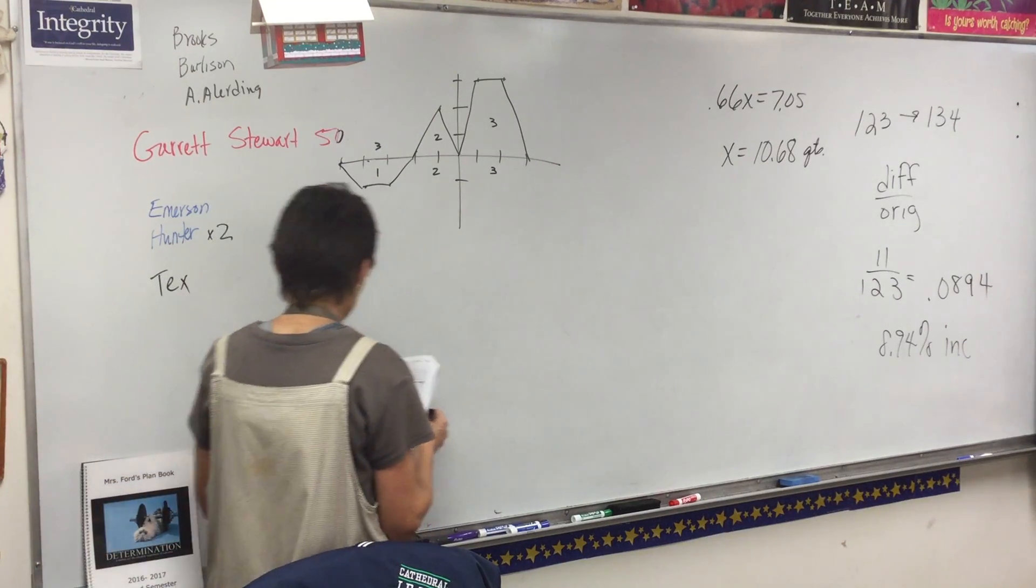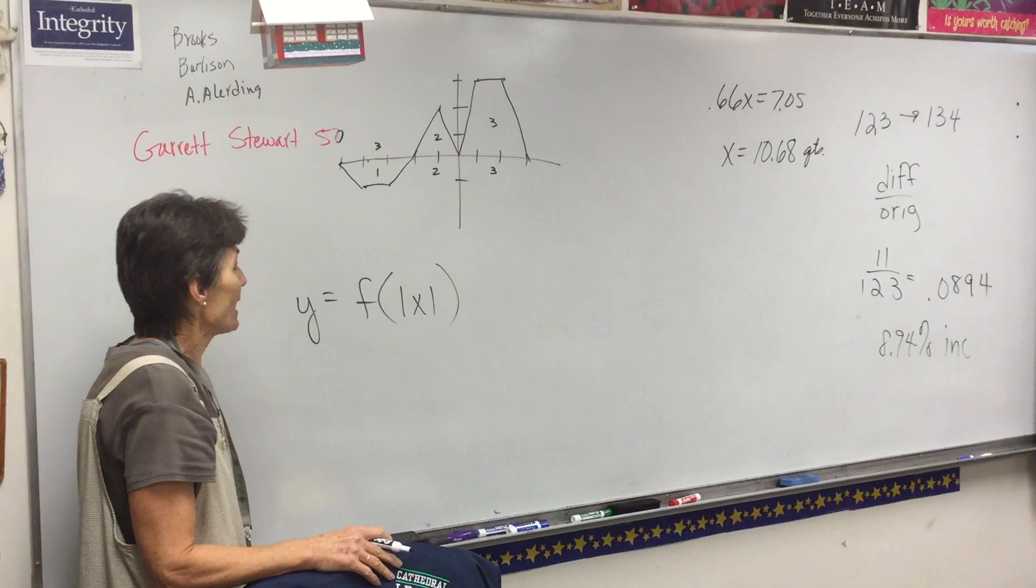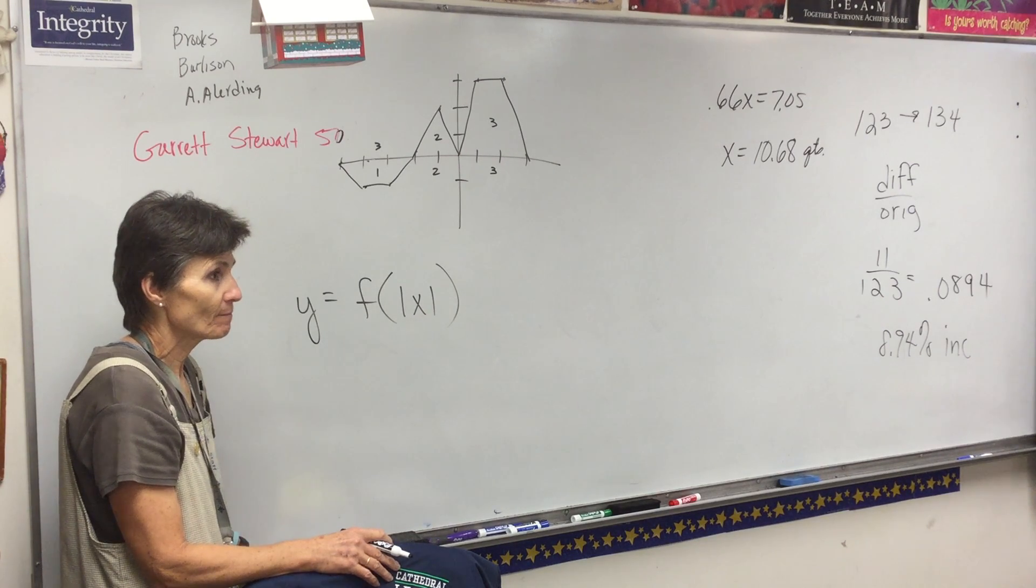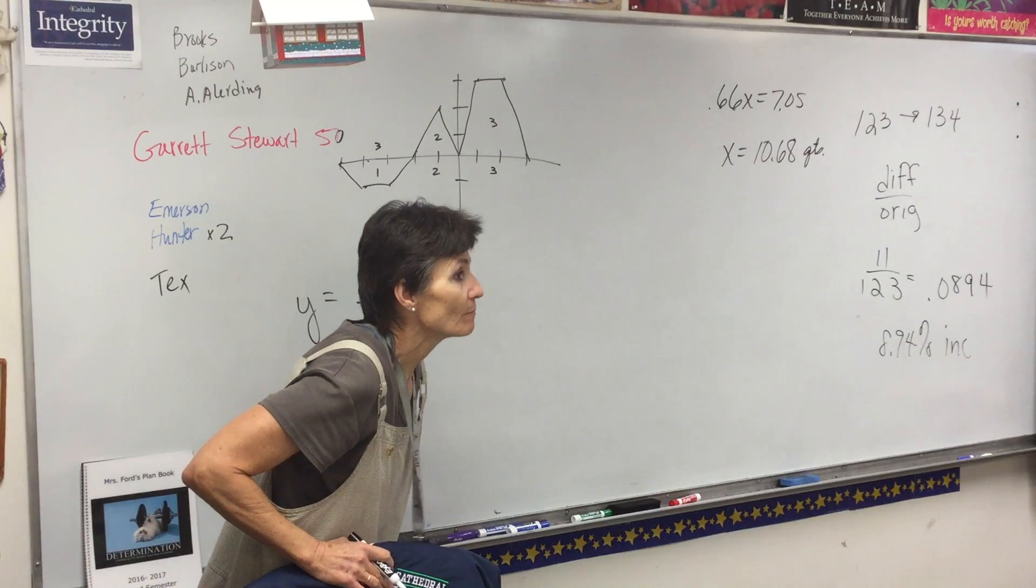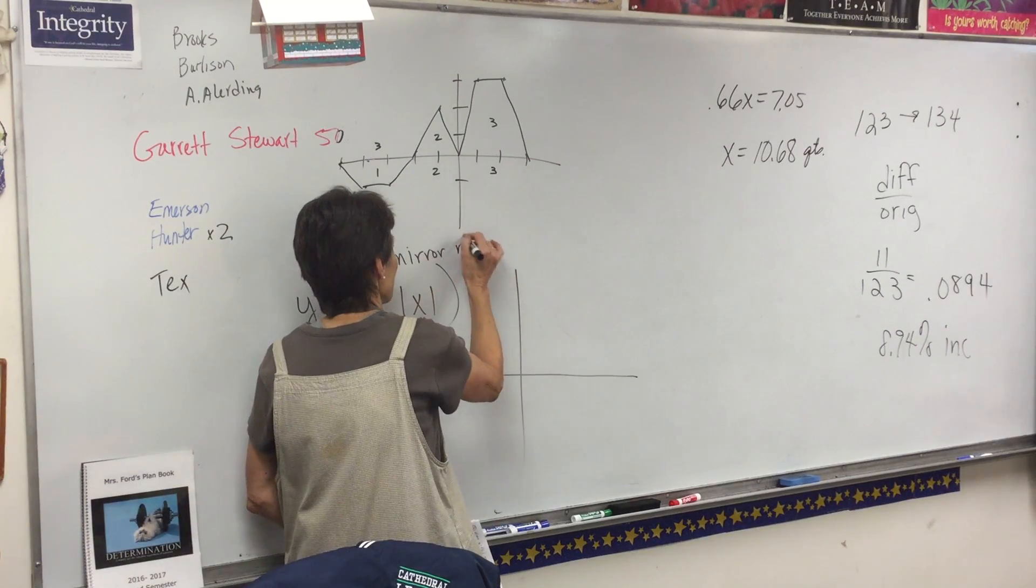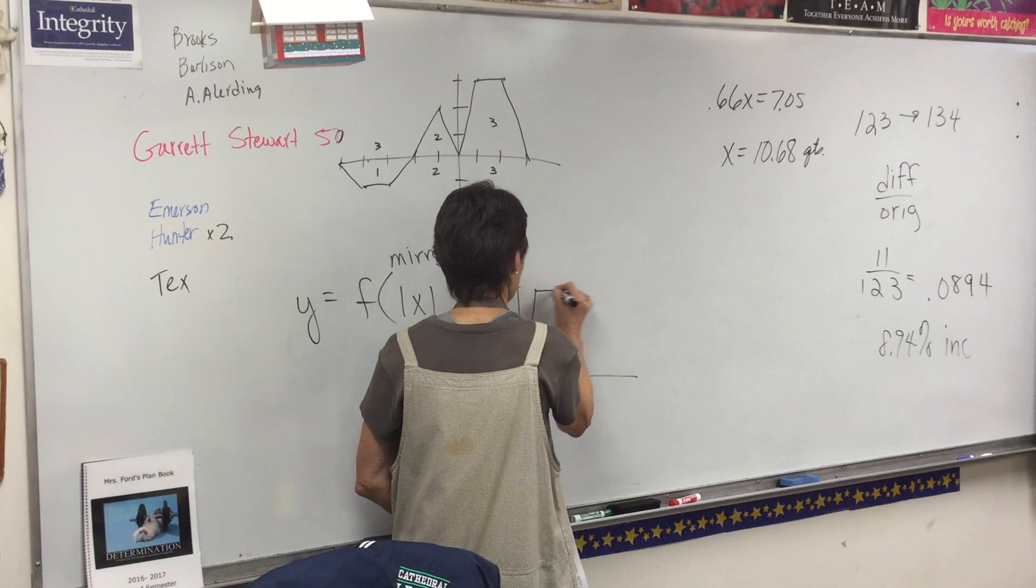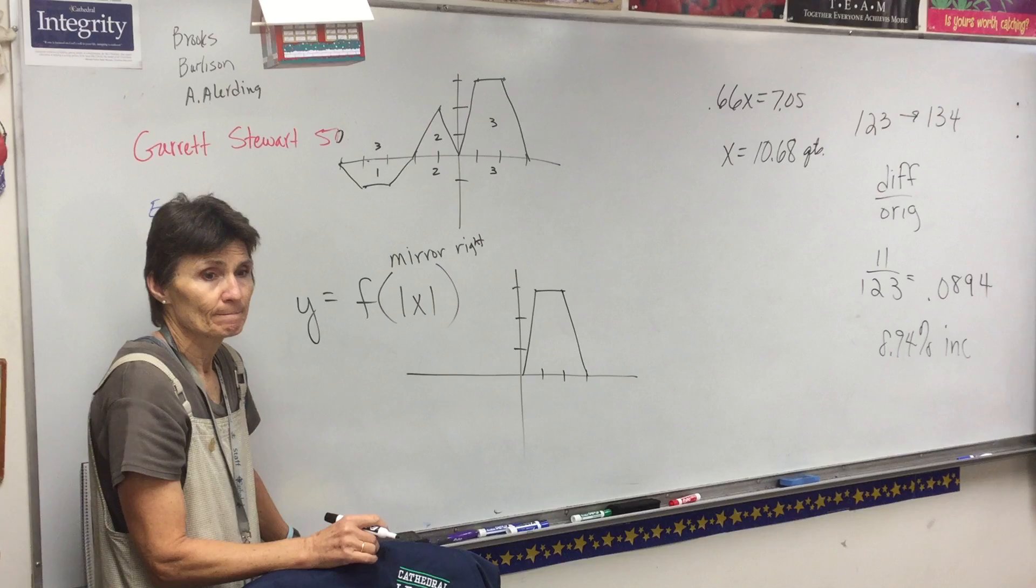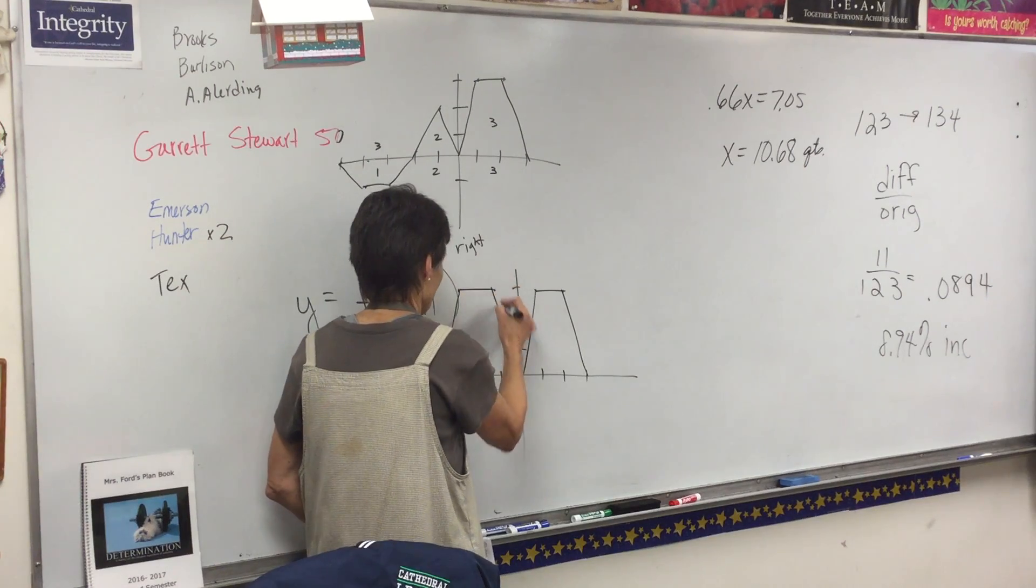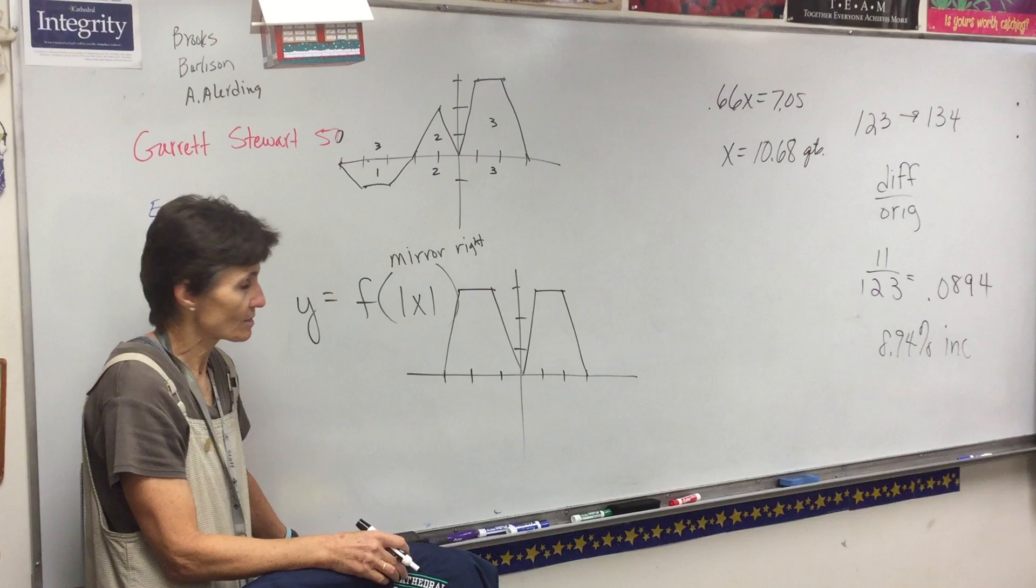So now we've got F of the absolute value of x. What does that do? It's the mirror, that's the mirror, so that means we mirror. I'm going to draw the right side, no changes, exactly the same. There it is, there's the right side of my picture, and then I redraw it on the other side. That's it.